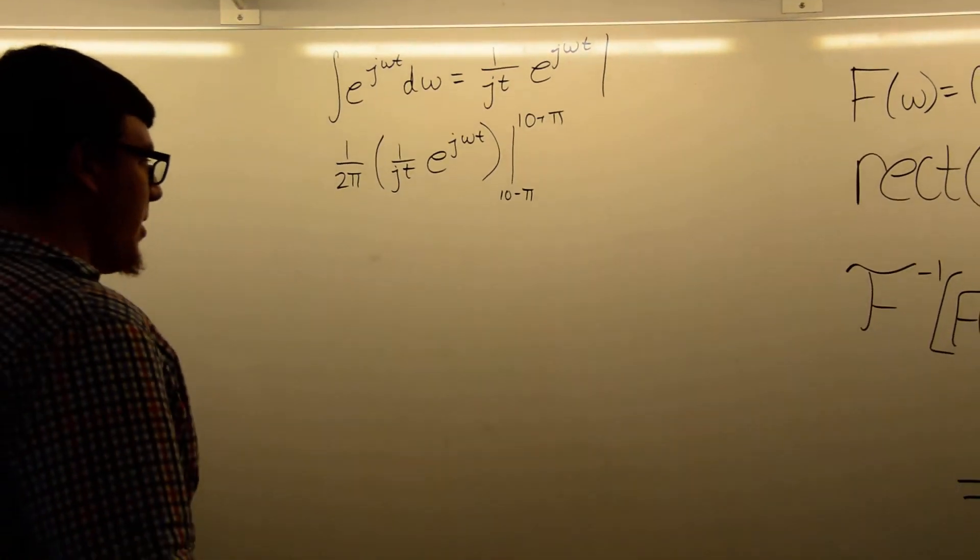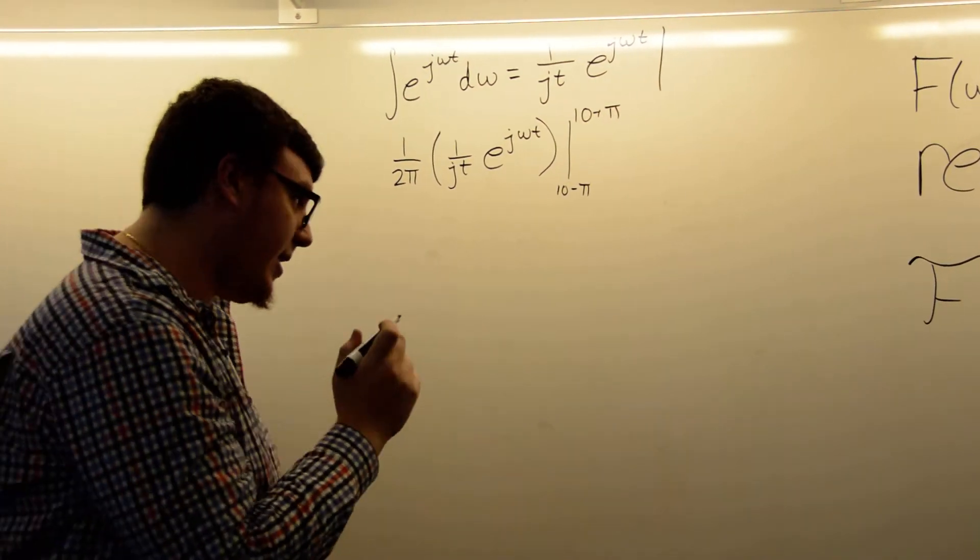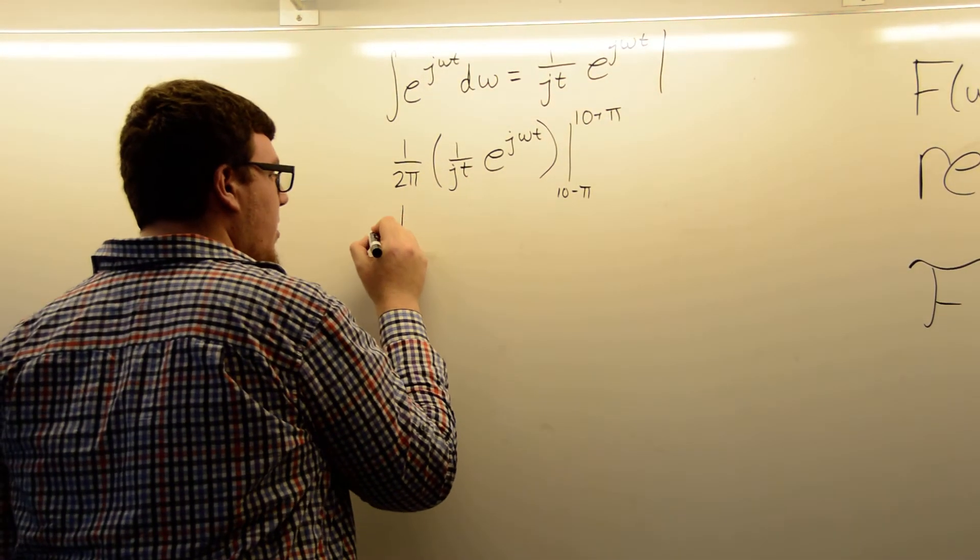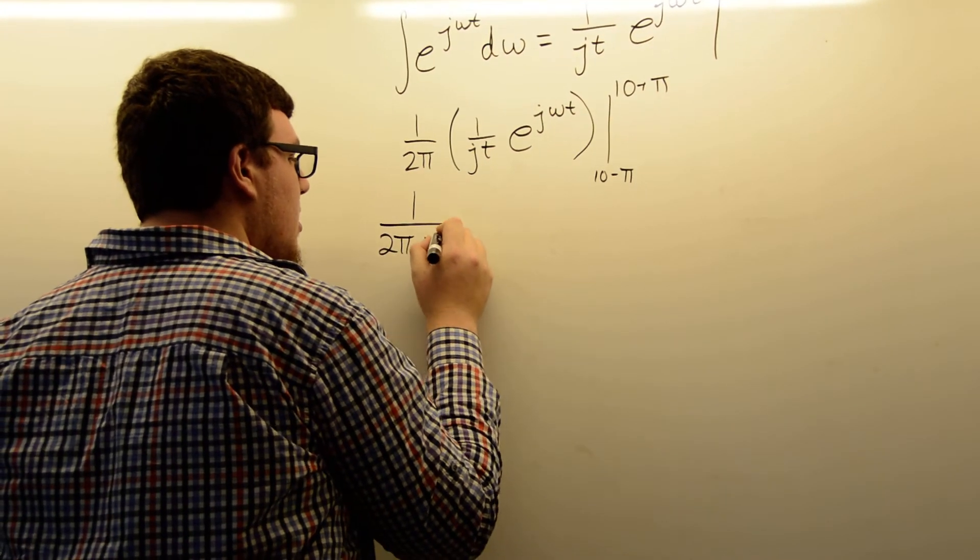Now, if we plug in here, I'm going to factor out the 1 over jt because that is a constant with respect to ω. We get 1 over 2πjt,